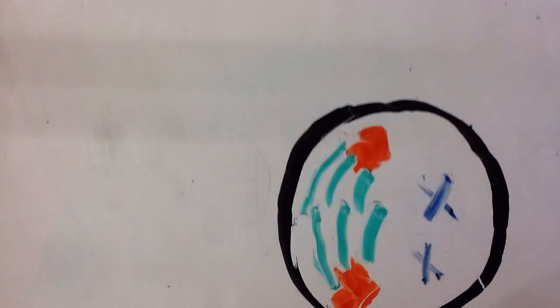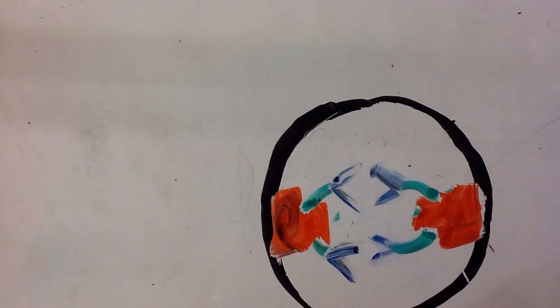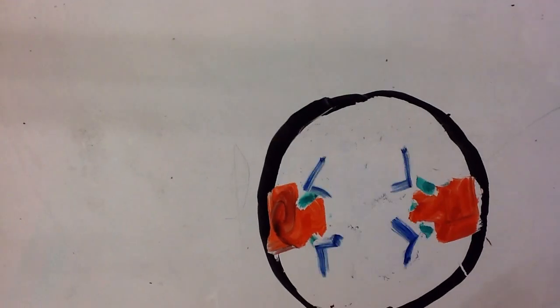The second stage is metaphase, where the chromosomes line up on the equator. In anaphase, the third phase, the chromosomes split to different sides of the cell.